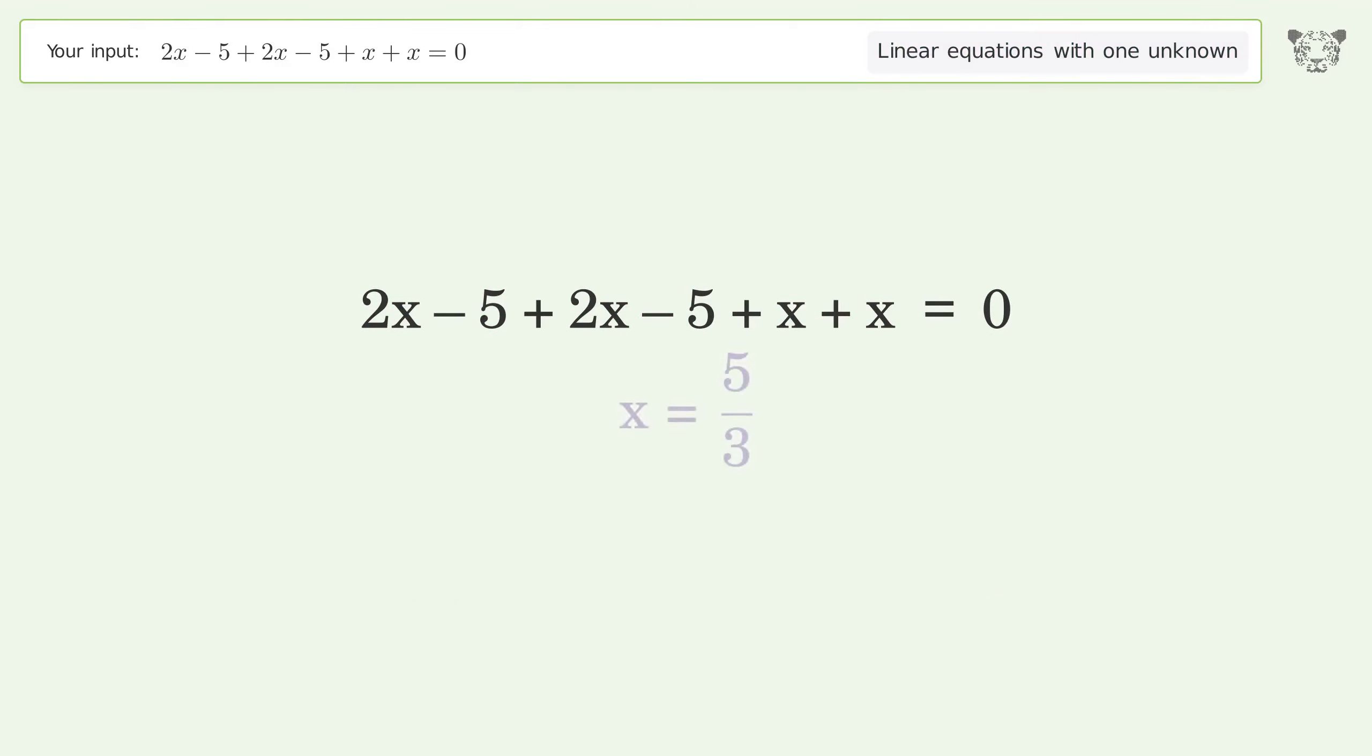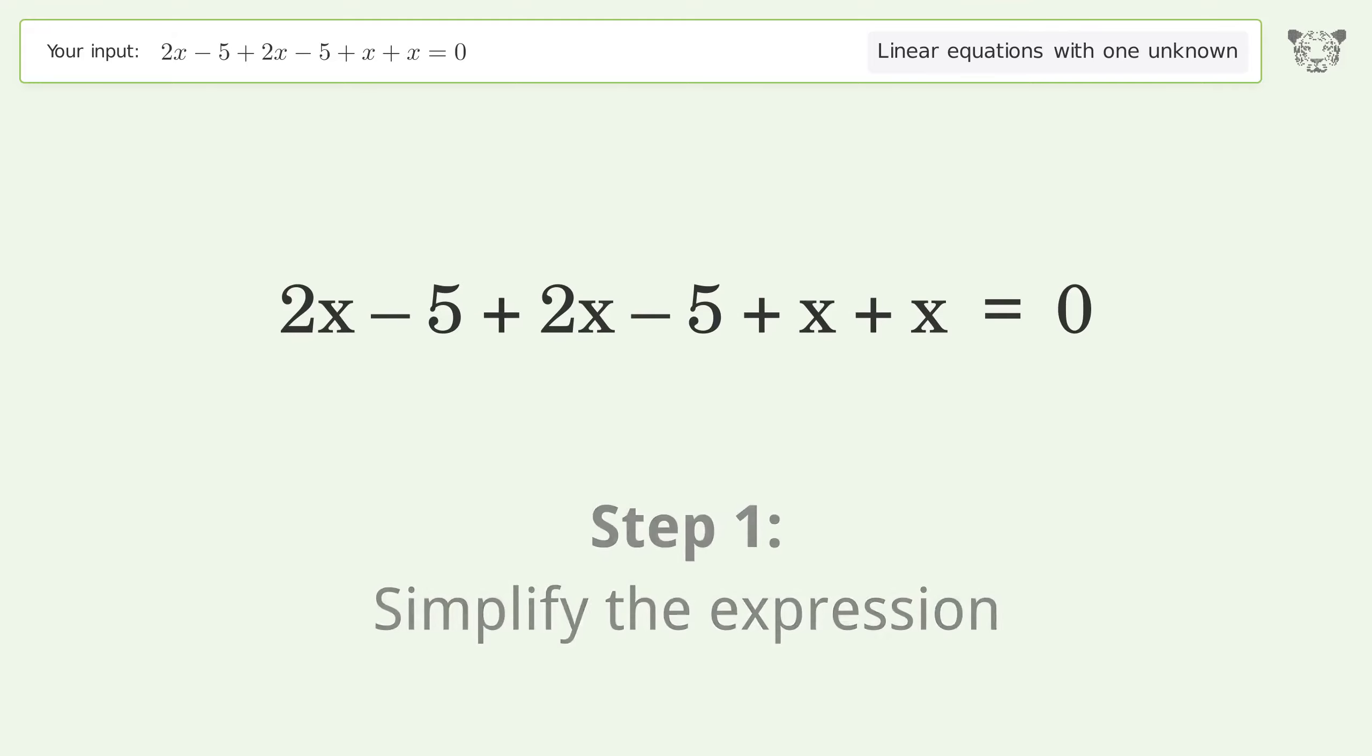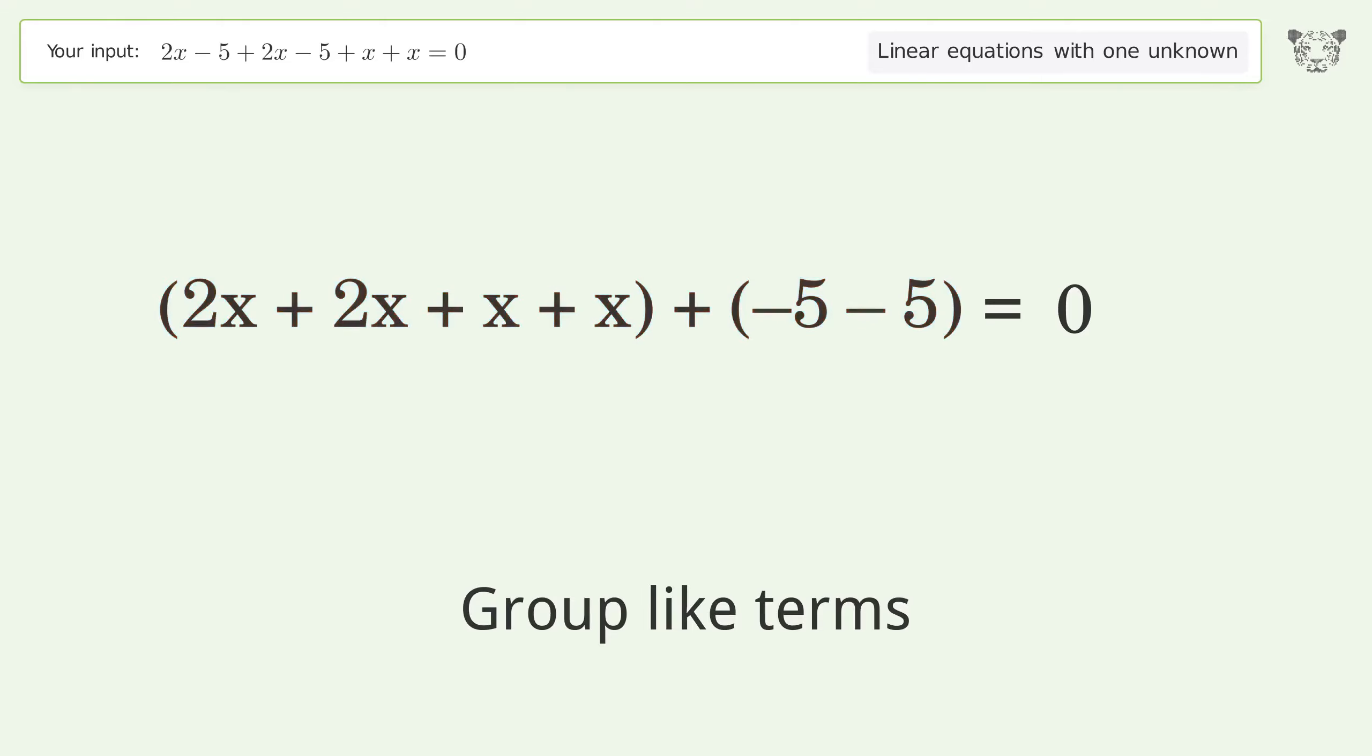You asked Tiger to solve this. It deals with linear equations with one unknown. The final result is x equals 5 over 3. Let's solve it step by step. Simplify the expression. Group like terms.